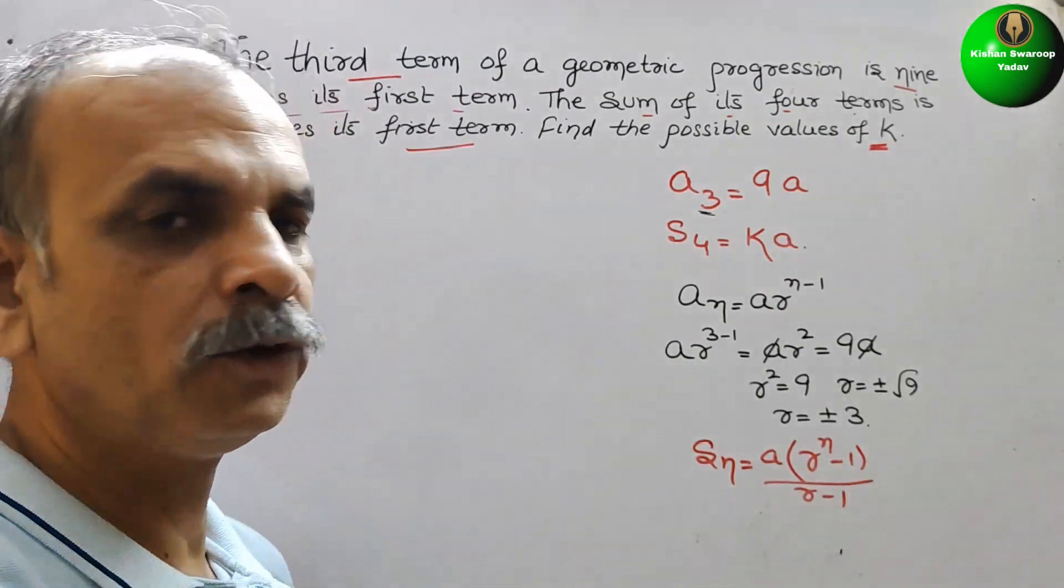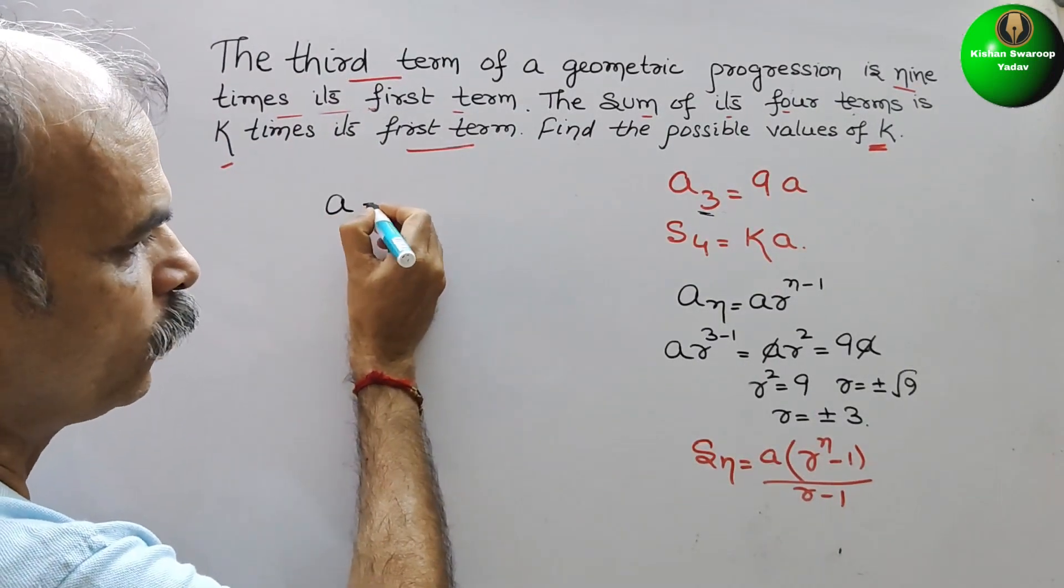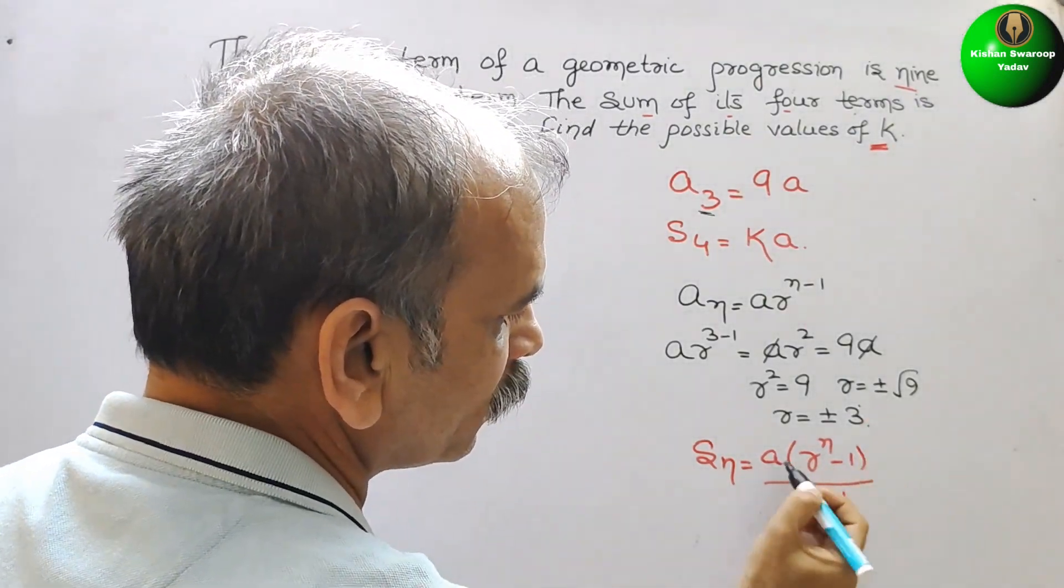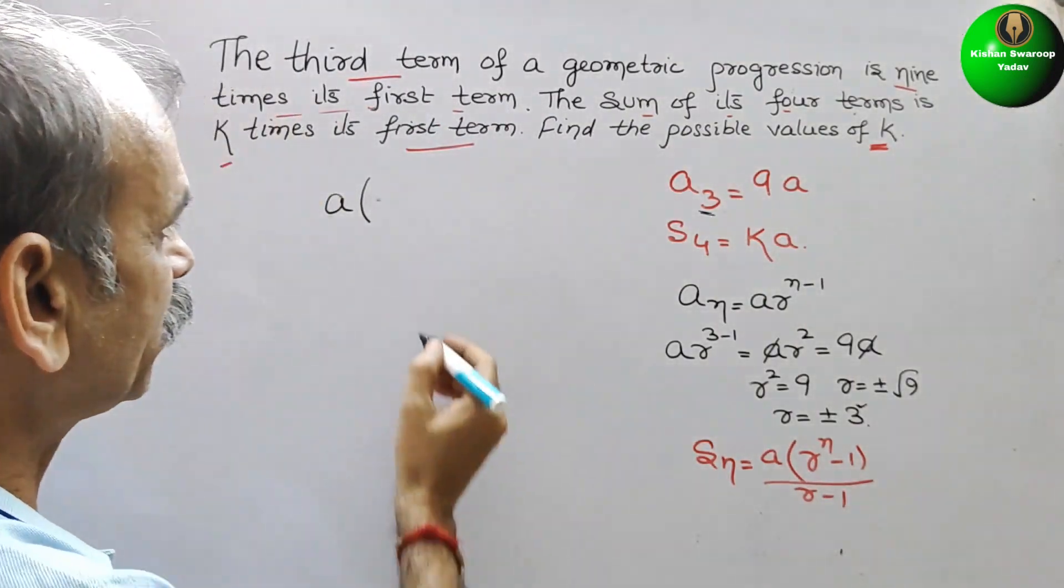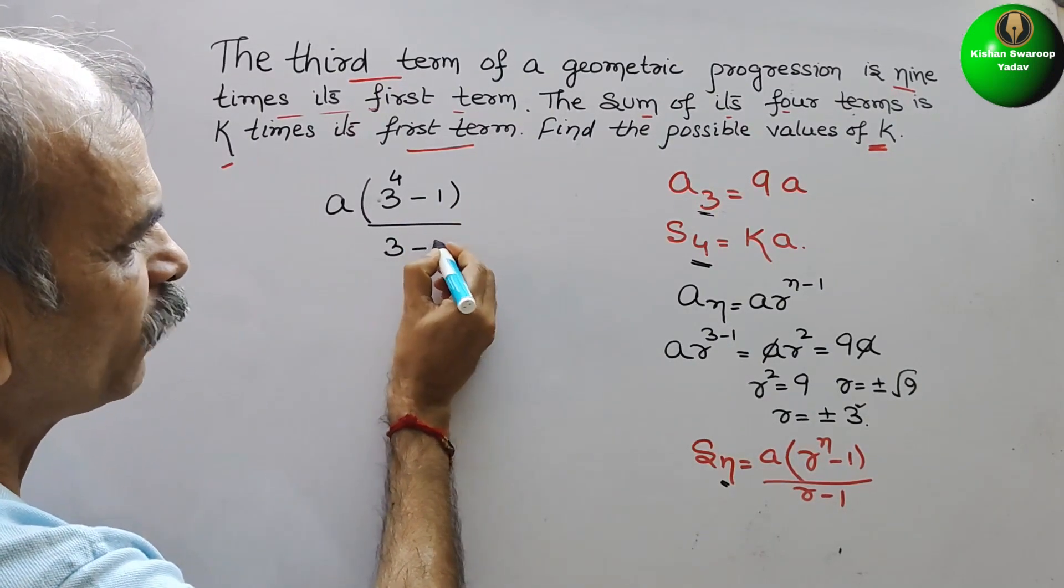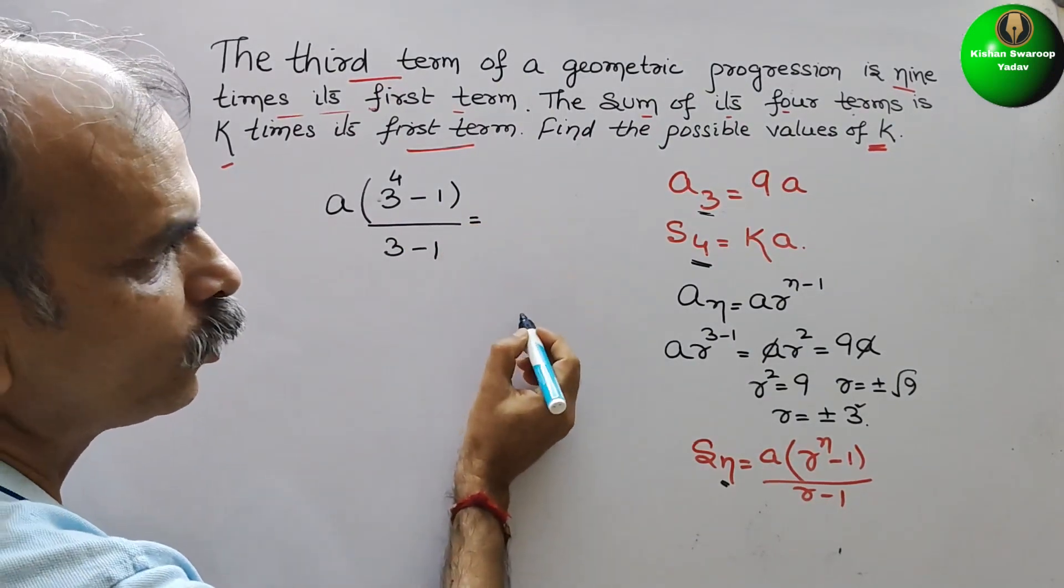So here, what we have to do, you can see that, we will write a into r, r first we will take plus 3. So here it will come as 3, and n what they have given, 4. So we will write 4 minus 1 by 3 minus 1, that is equal to ka.